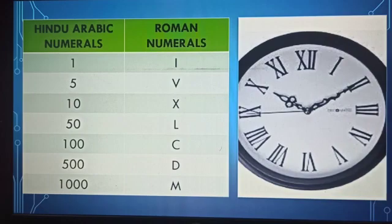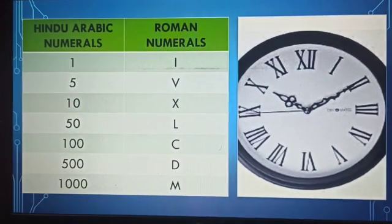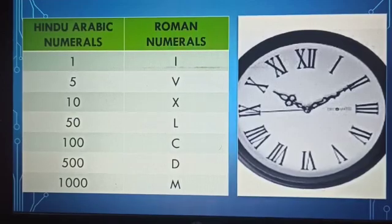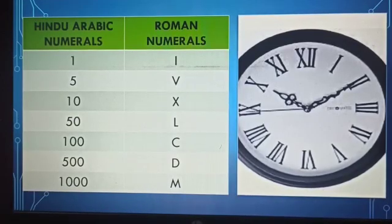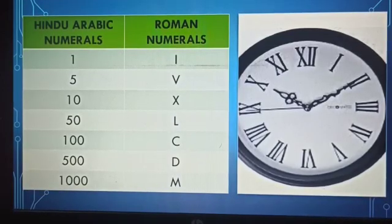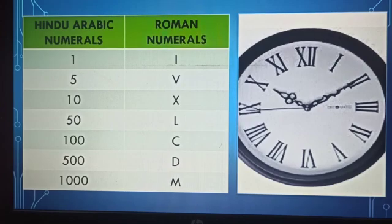Students, have you ever seen a clock of this type? Look at this clock. In place of numerals 1 to 12, symbols are shown here. These symbols are called Roman Numerals.